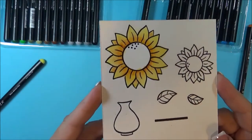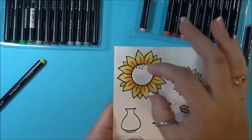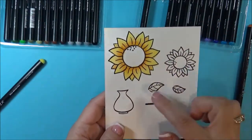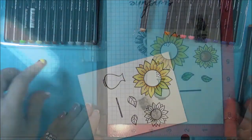There we go, I'm going to repeat that on the other flower as well. I'm not going to color in the center of this one because I'm actually going to layer the flowers on top of one another, and then I'm going to do the leaves and the vase, and then I'll be right back to show you the rest.